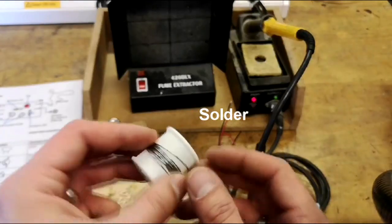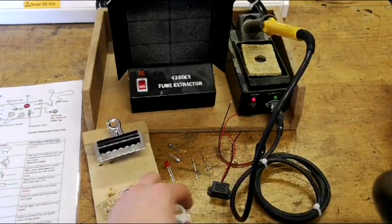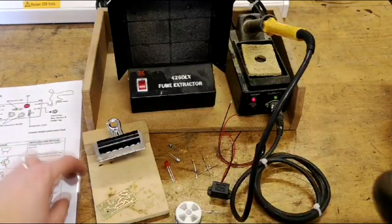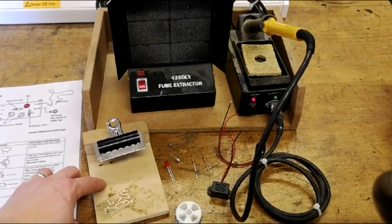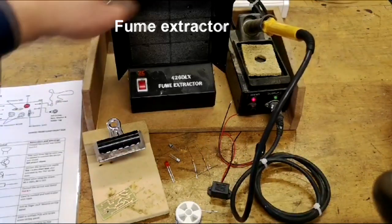Solder is effectively the glue that conducts electricity which will hold all of your components onto the circuit board. We have a bulldog clip mounted onto a board that's going to act as a steady hand to hold everything in place for us, a fume extractor, and a soldering iron.